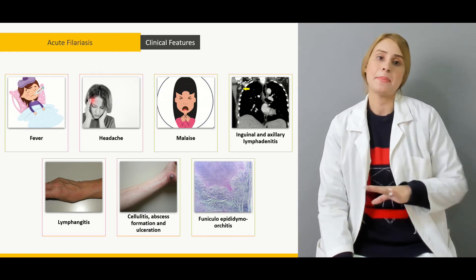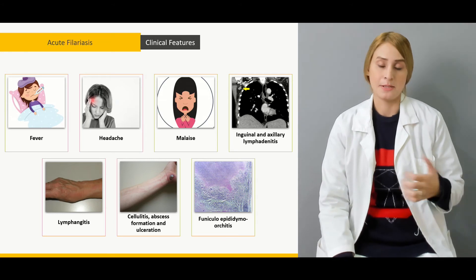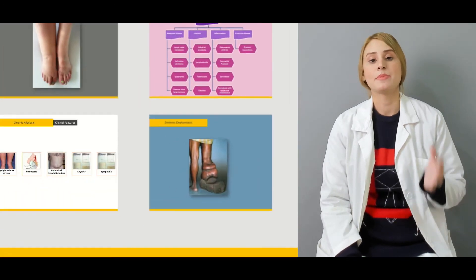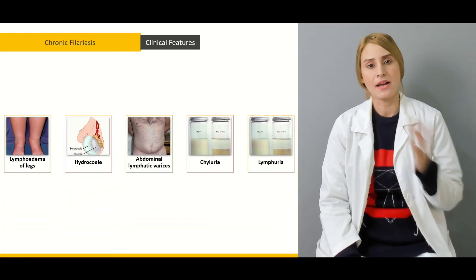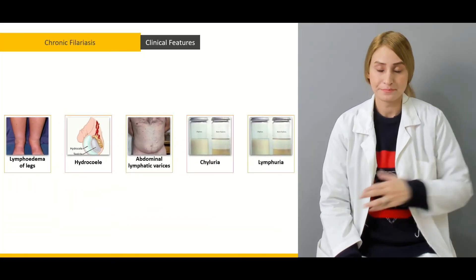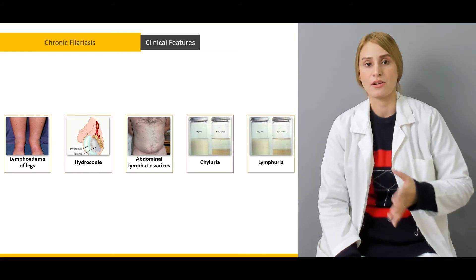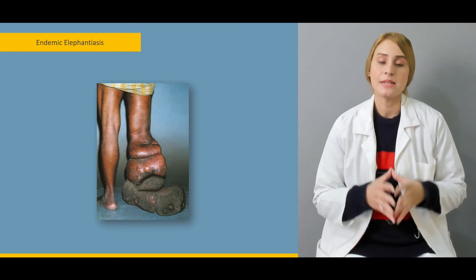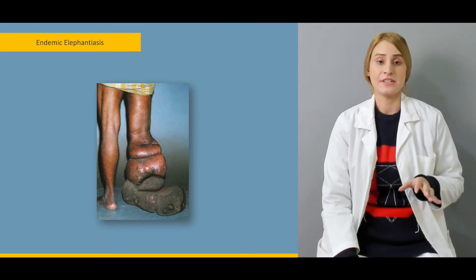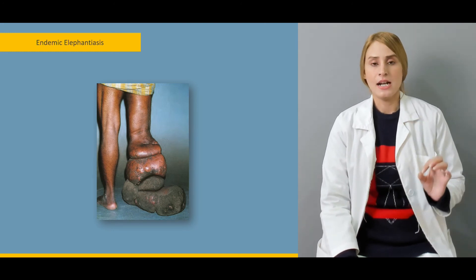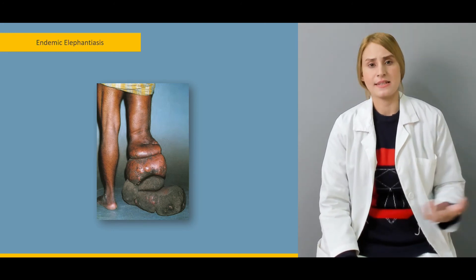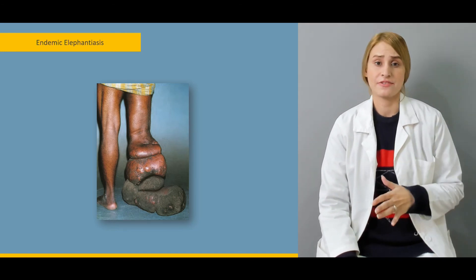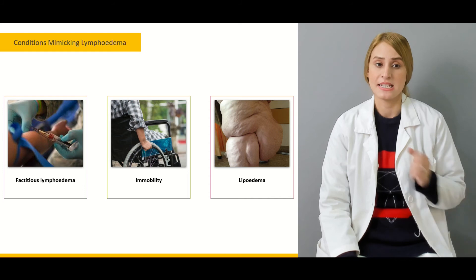We'll be talking about the acute infection of filariasis and how the patient is going to present, as well as the symptoms of the chronic inflammation caused by this organism, which is called Wuchereria bancrofti. Then there is another important entity to be discussed, which is endemic elephantiasis — a very advanced form of the disease that badly affects the development of vascular insufficiency as well.